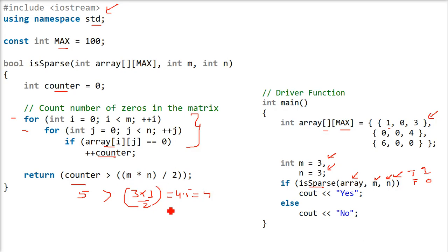So 5 is greater than 4, so this is going to return true. True will come here, that is 1 will come here. You will print yes. You can also print "this matrix is a sparse matrix."